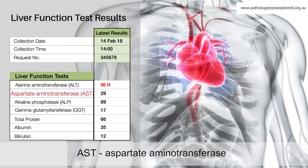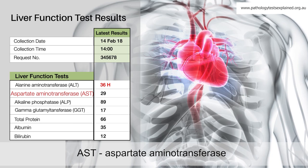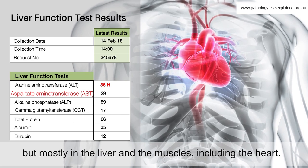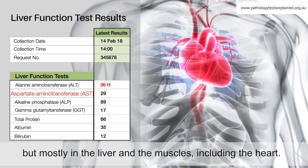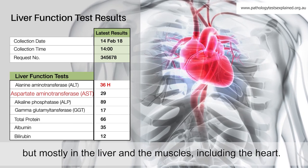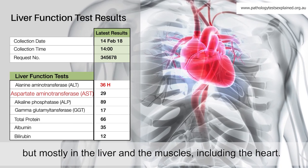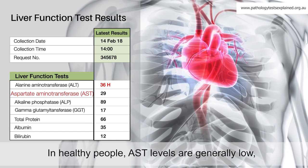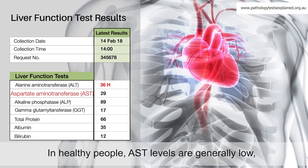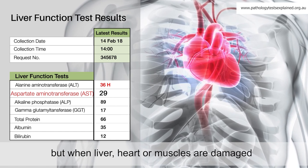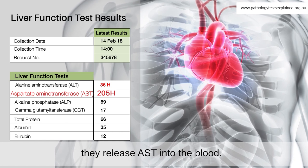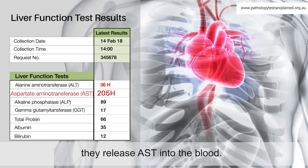AST, aspartate aminotransferase, is found throughout the body but mostly in the liver and the muscles, including the heart. In healthy people, AST levels are generally low, but when the liver, heart, or muscles are damaged, they release AST into the blood.